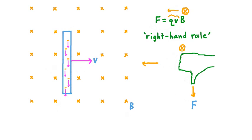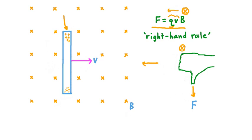The force acting on the electrons will point down toward the lower end of our conductor, and because these charges are mobile and easily able to move throughout the conductor, they'll pile up at that end. What about the force on the conductor's positive charges? If the sign of our charge changes from negative to positive, then the force direction is simply opposite. So the magnetic force acting on the positive charges would act upward. Unlike the mobile negative charges, the positive charges in our conductor are fairly fixed in place. Despite this, a relative positive charge will develop at the upper end of the conductor, because the negative charges that used to balance these positive charges out have all been driven downward by the magnetic force.